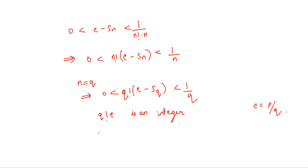And q factorial times Sq is nothing but q factorial times 1 plus 1 plus 1 over 2 factorial plus dot dot dot, so on up to 1 over q factorial, which is again an integer.